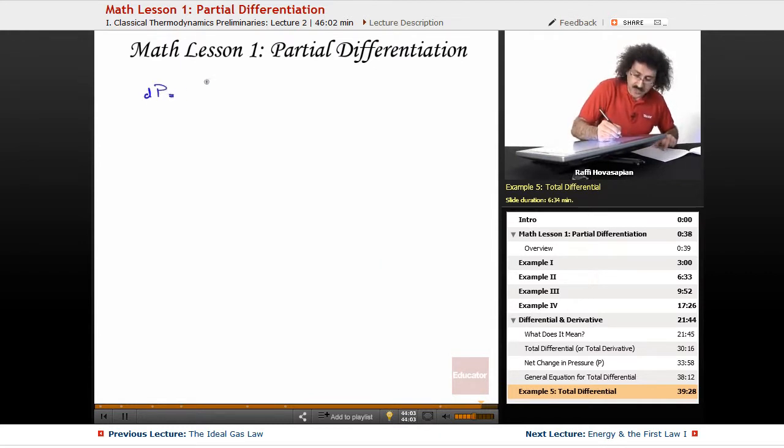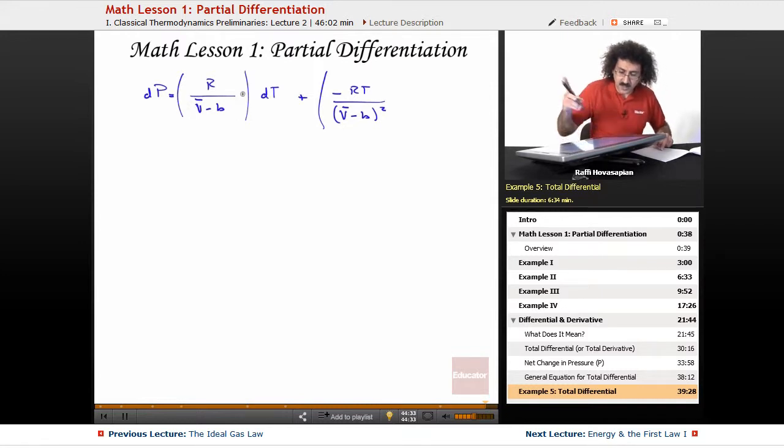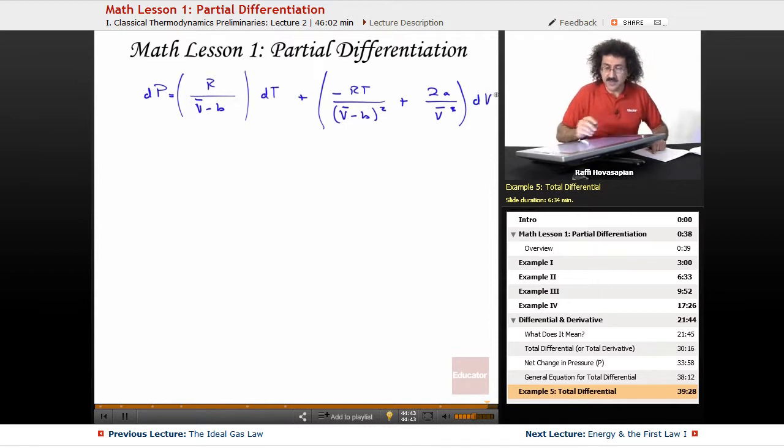The total differential of P is equal to R over V minus B times DT plus minus RT over V minus B squared, this is, oh, this one is squared, not this one. This one is squared, not this one, V minus B, it's going to happen a lot. Plus 2A over V cubed times DV. This is the total differential for the Van der Waals equation.